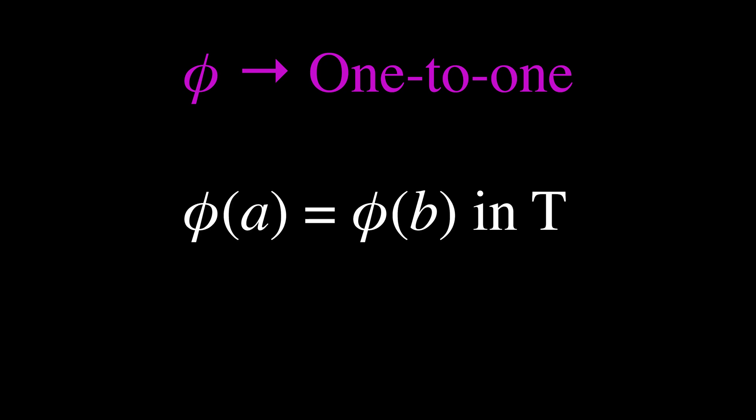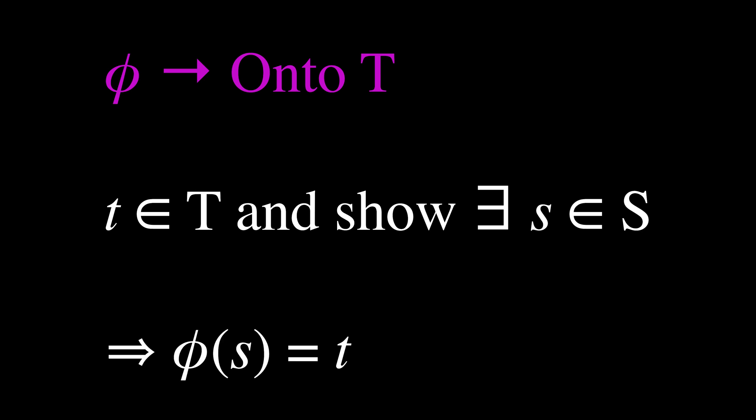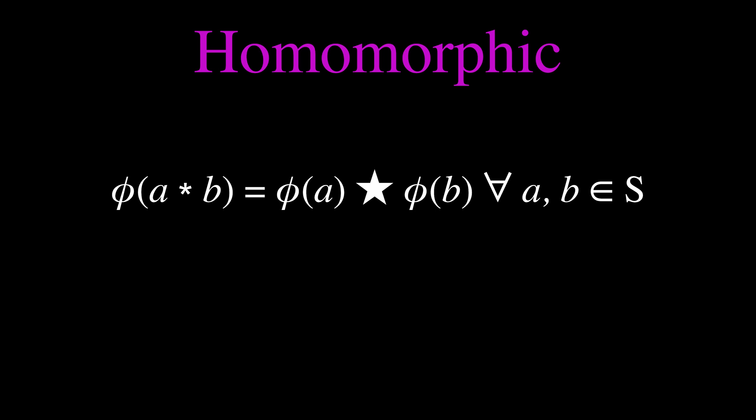Essentially, isomorphism is a way of comparing two binary algebraic structures to determine if they are structurally the same or not. To show that two binary structures are isomorphic, assuming we have a function φ, we first want to show that φ is a one-to-one correspondence, that is, bijective. This involves showing it is one-to-one and onto T. To show it is one-to-one, we need to show that φ(A) = φ(B) in T implies A = B in S. To show φ is onto T, suppose T is an element of T and show there exists an S in S such that φ(S) = T. Finally, we need to show it is homomorphic — namely that φ(A asterisk B) = φ(A) star φ(B) for all A, B in S. Basically, we compute both sides of the equation and see if they are equal.